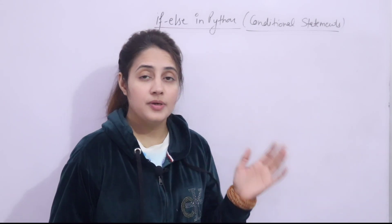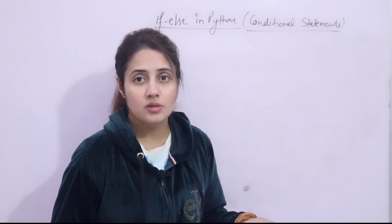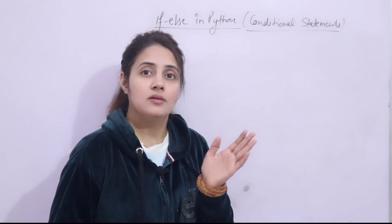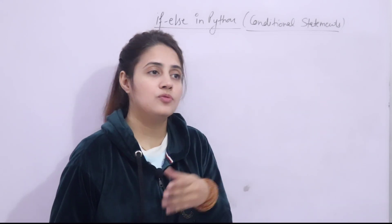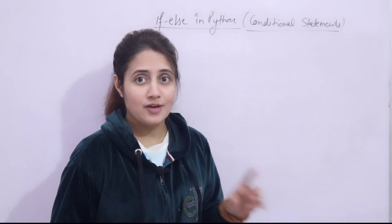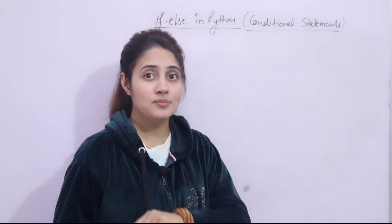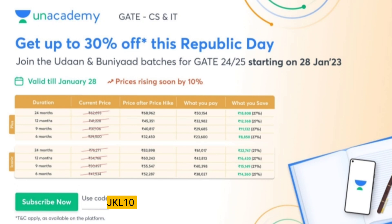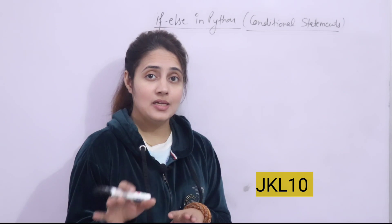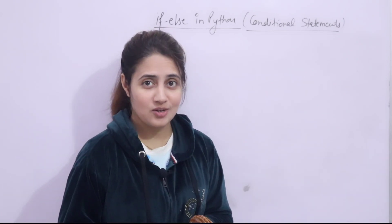These batches offer comprehensive syllabus coverage, PSU exam preparation, interview preparation, previous year questions, daily practice questions, digital and home-delivered printed books, and test series. On this Republic Day, An Academy is offering up to 30% savings on GATE and ESE plus or iconic subscriptions, valid till 28th January. A price hike is coming soon, so subscribe today and use my code JKL10. All relevant links are in the description.